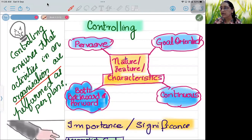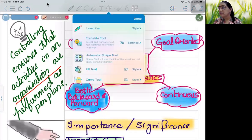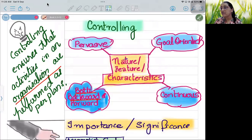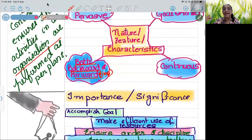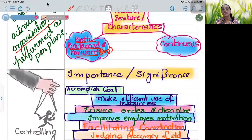This one is very important. Controlling is both backward and forward. This comes in the paper. What is the meaning of backward and forward? Control is first on what we have planned. We check what we thought and what happened. And it is forward because we do it for the future as well. This is one of the very important points of controlling.